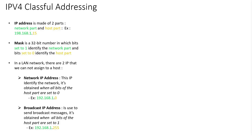Hello, this session is about IPv4 classful addressing. I will start with some global concepts on IPv4. An IPv4 is made of two parts: a network part and a host part. In this example, the three first octets belong to the network part and the last octet belongs to the host part. To identify the network part and the host part, we use the concept of MASK. A MASK is a 32-bit number in which bits set to 1 identify the network part and bits set to 0 identify the host part.